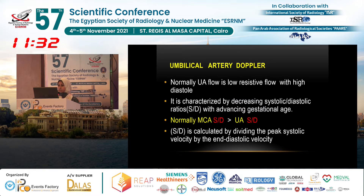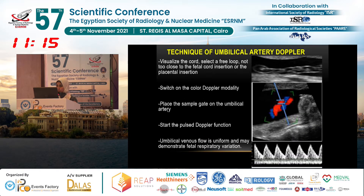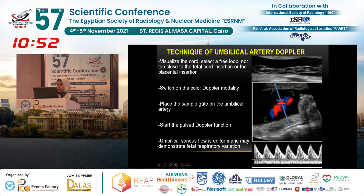Normal umbilical artery flow is a low-resistance flow with high diastolic flow, characterized by decreasing resistance with advancing gestational age. To measure the umbilical artery, we visualize the cord to detect a free loop not close to the fetal or placental insertion, then switch to color Doppler. This is the waveform obtained from the umbilical artery, and this is the waveform obtained from the vein. The umbilical artery is characterized by high diastolic flow, while the umbilical vein shows a flat waveform.